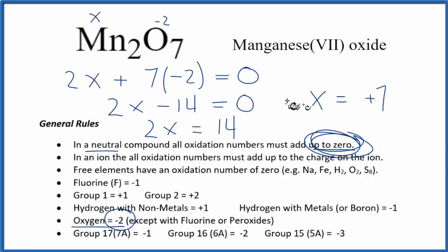And that's the oxidation number on the manganese in Mn2O7. So let's write that in, plus 7, and we're done.